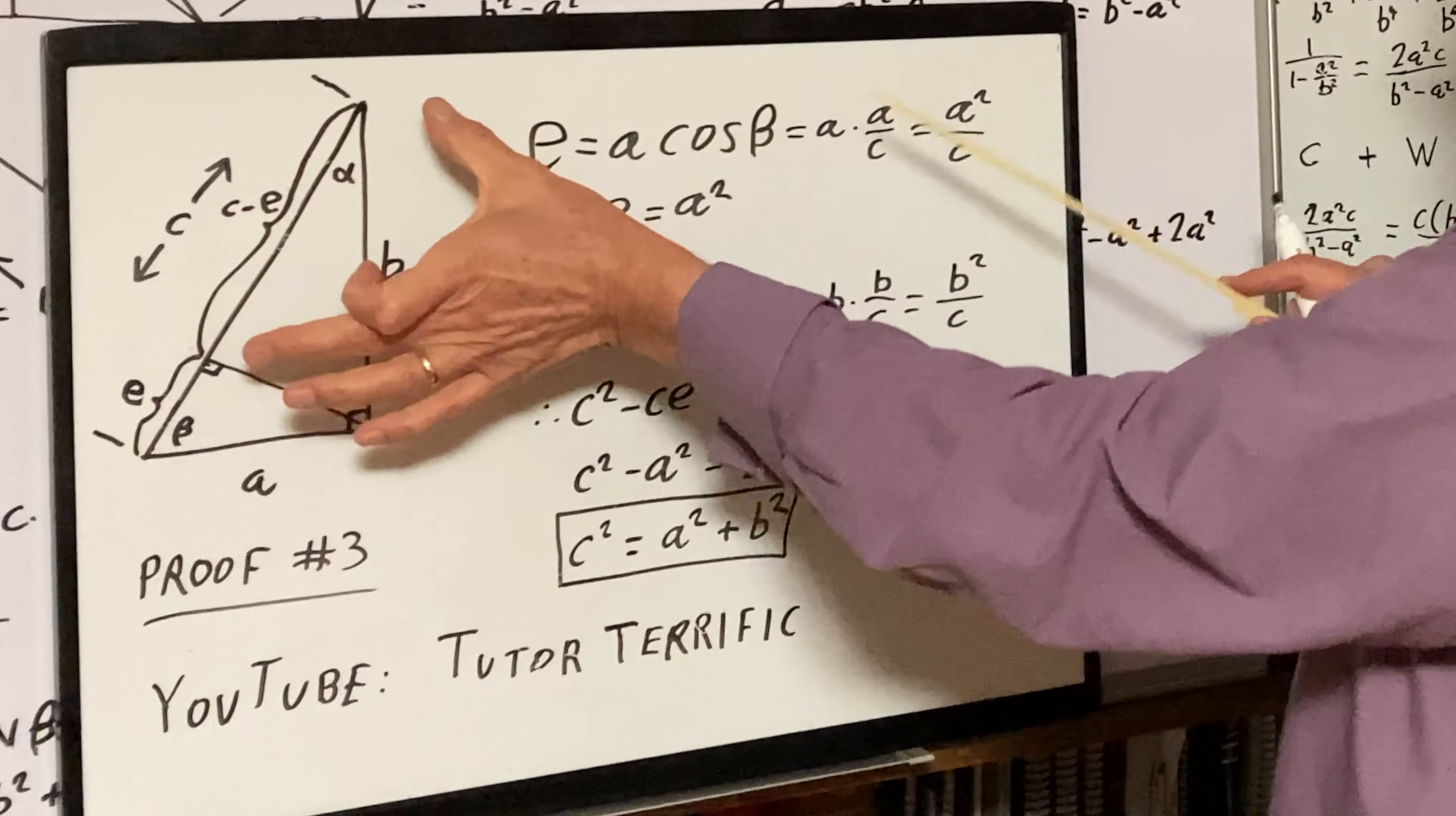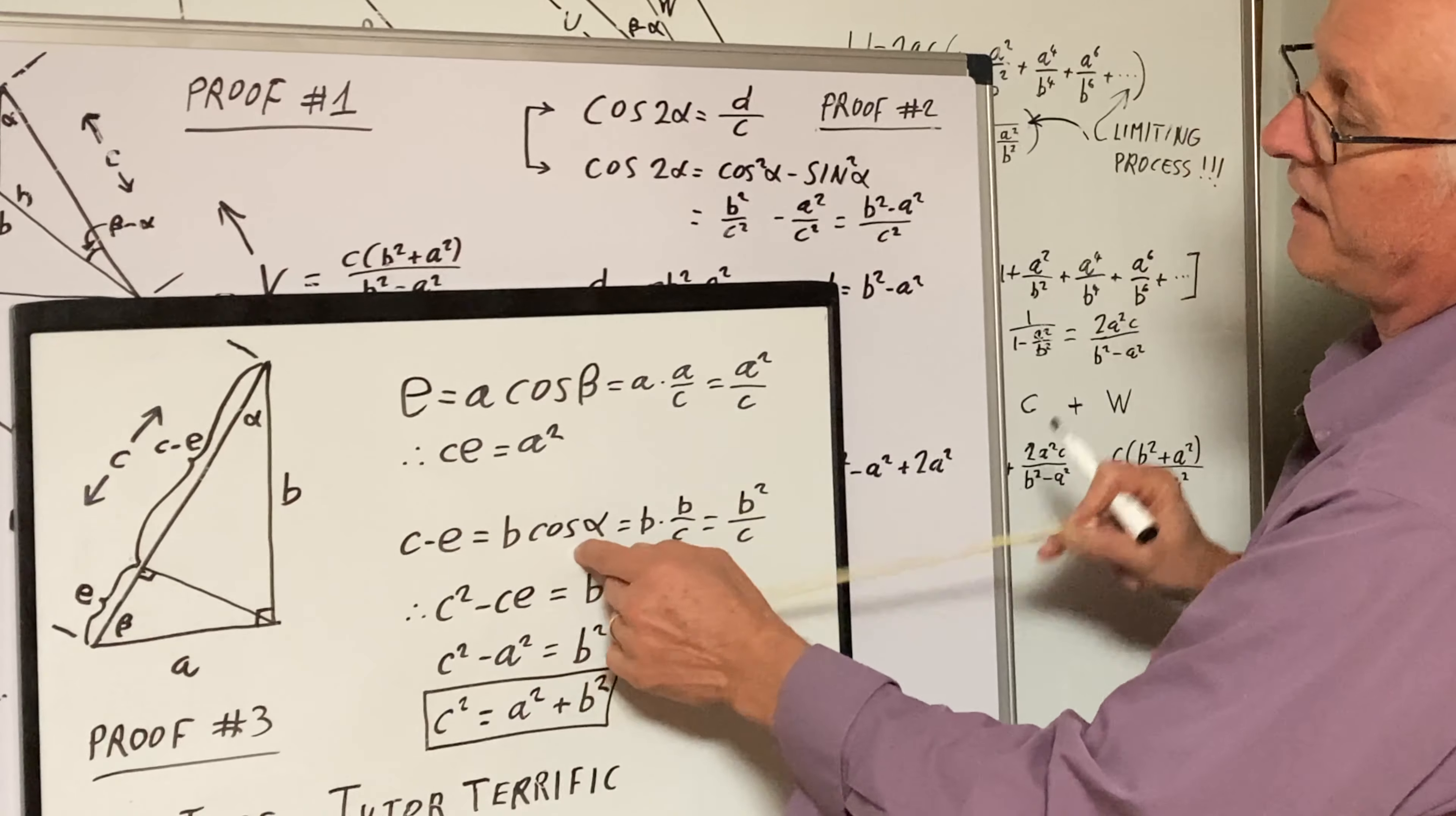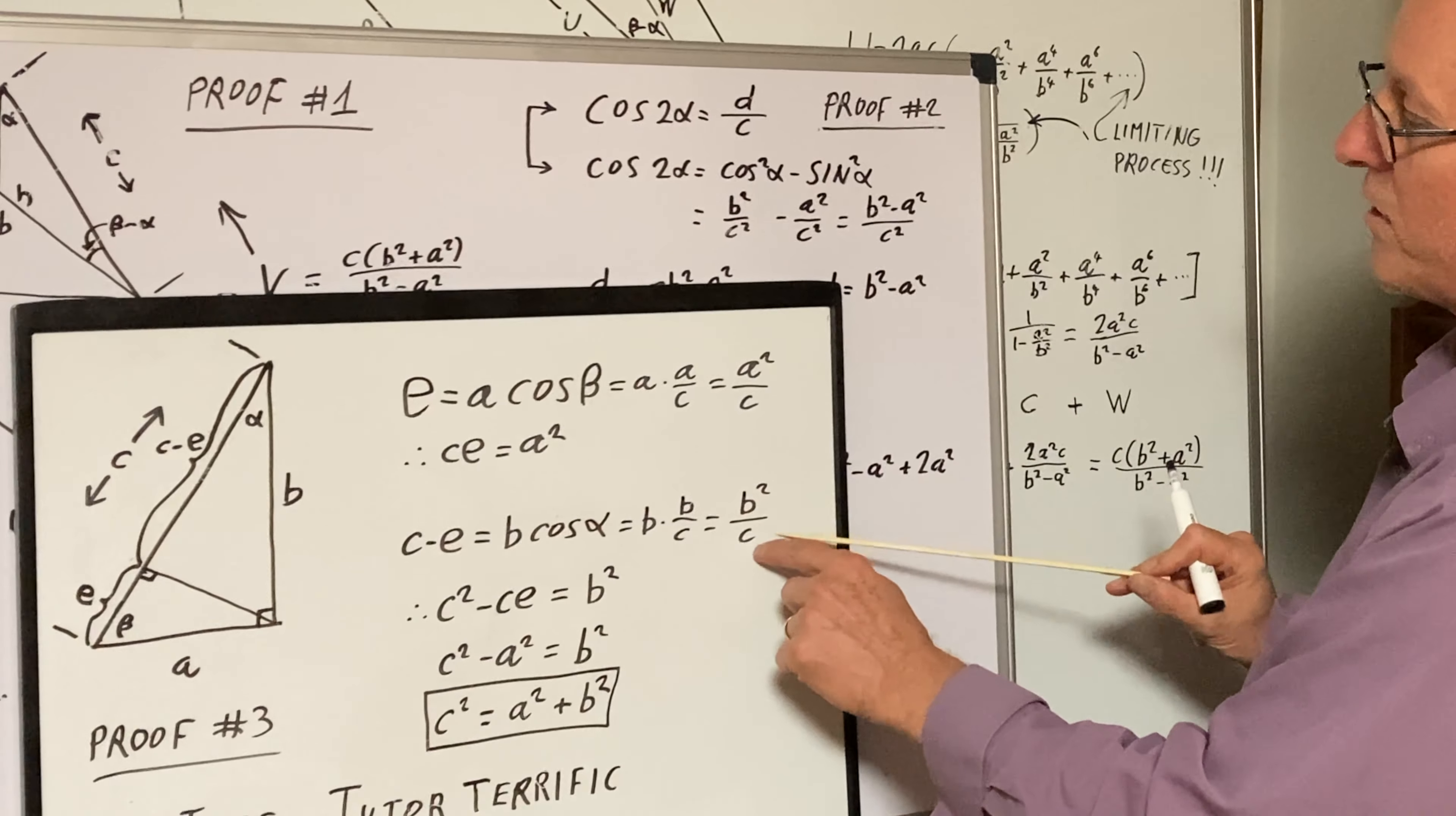Now let's look at this segment, C minus E. What is that? That's B cosine alpha because cosine of alpha is CE adjacent over B, the hypotenuse. This is a right angle. So C is B cosine alpha. But cosine alpha is B over C. Here's alpha. Cosine alpha would be B over C, adjacent over hypotenuse. Similar triangles. That's what we're dealing with. So the whole thing is B squared over C.